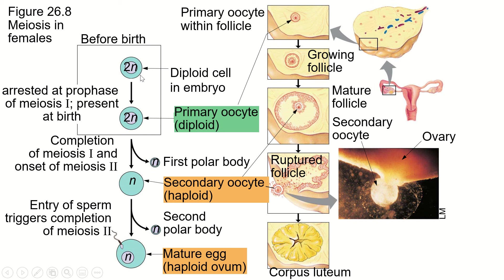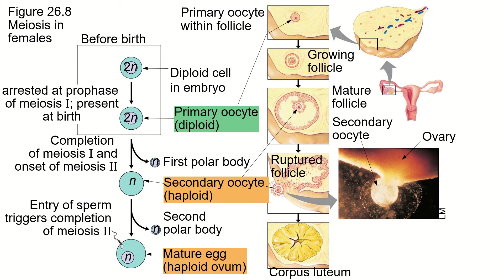So we start off with a diploid cell. This is actually developed in the embryo before the female is born. The ovary of the human female has about 2 million what we call primary oocytes — diploid cells that just wait and sit there. They've done prophase, they've done crossing over, and then they're just going to wait in prophase one.